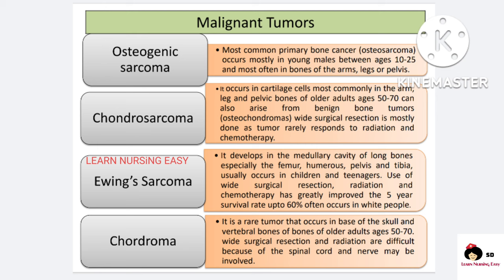In malignant tumors, osteogenic sarcoma is one of the primary metastatic bone cancers. It occurs in ages 10 to 24 years, more commonly in the arms, legs, and pelvis. Chondrosarcoma occurs in the cartilage cells, most common in arms, legs, and pelvic bones, and is common in adults aged 50 to 70 years. It occurs when there is proliferation of benign osteochondroma tumors that can transform into chondrosarcoma, which is a metastatic tumor.